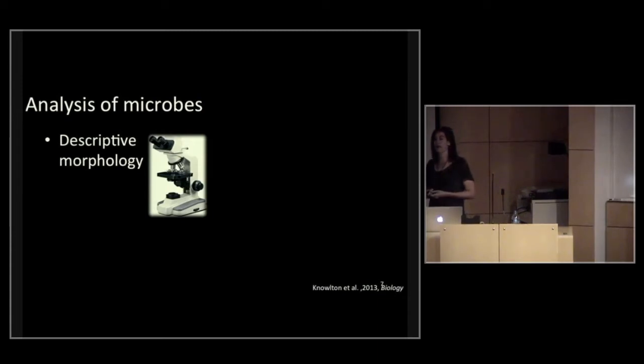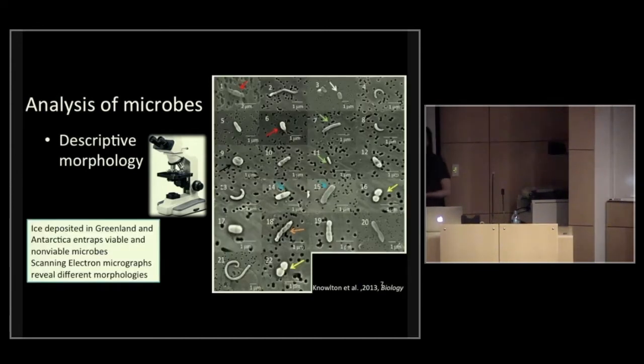When we analyze microbes, one of the primary instruments we use is a microscope. One of the first things we do is descriptive morphology. What do they look like? In a recent paper, this was in 2013 in the journal Biology, they looked at ice that's been deposited in Antarctica and Greenland. They looked at ice cores and how the different types of morphologies entrapped in these ice cores of the bacteria. They looked at both viable, which are living microorganisms, and non-viable microbes. And they used the image that I'm showing here.